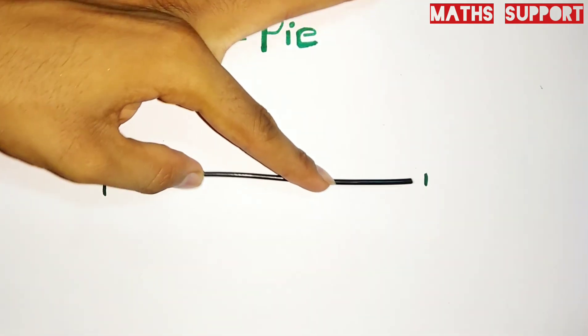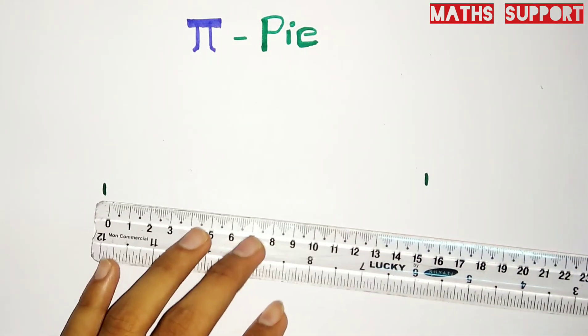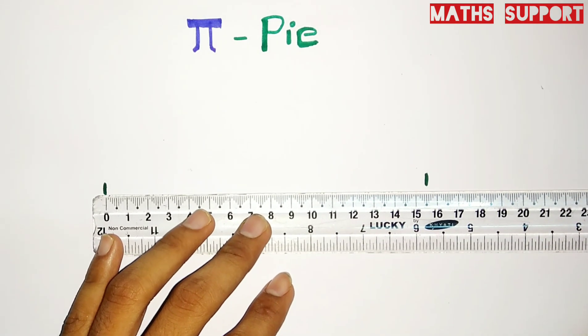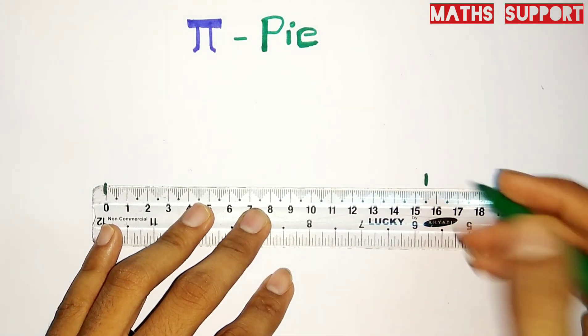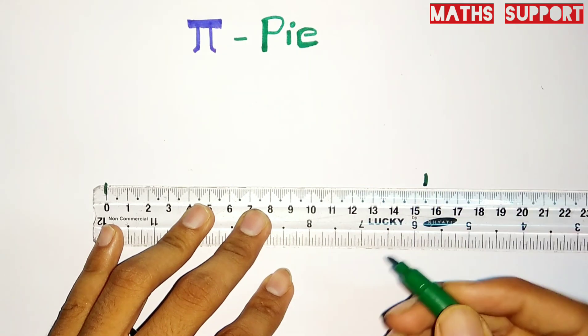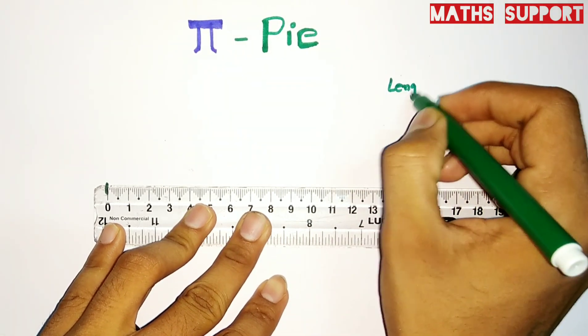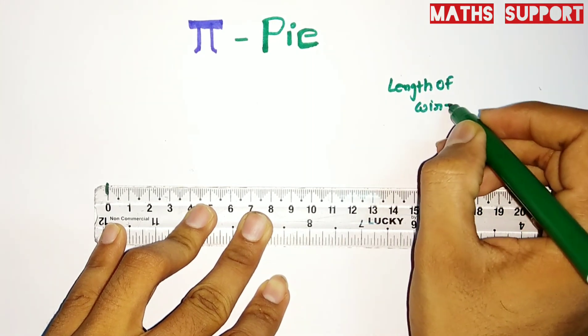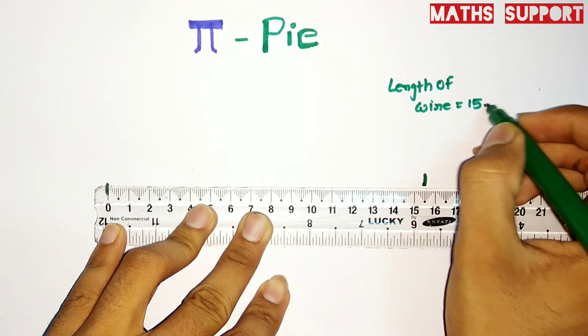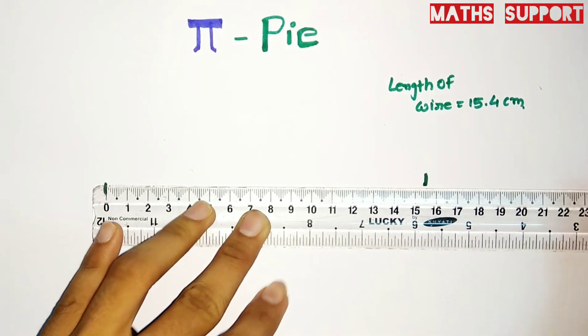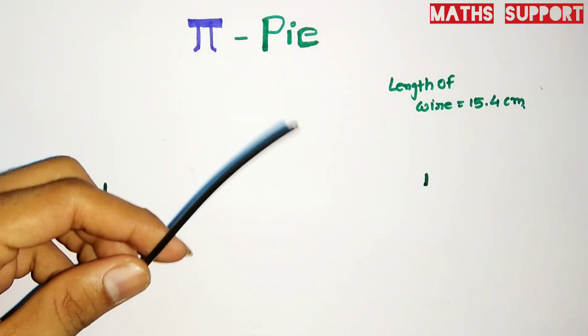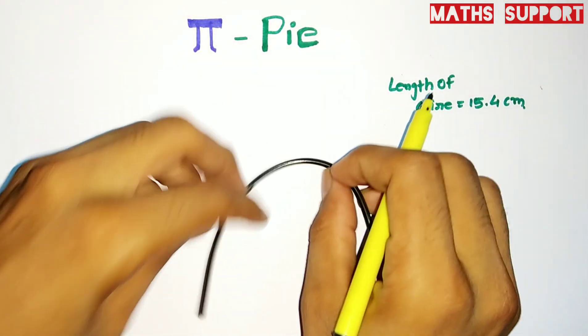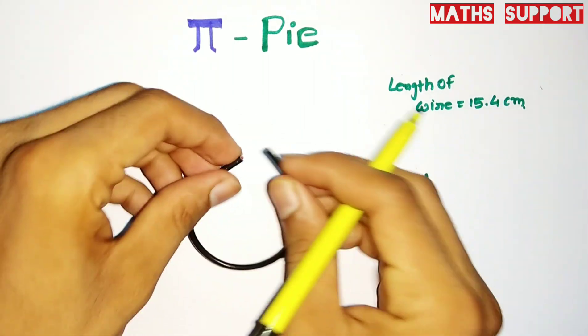The measurement of the wire - the length of wire - I'm getting 15.4 centimeters. Now I'm making a circle from this wire by connecting these two points and combining them like this to make an approximate circle.